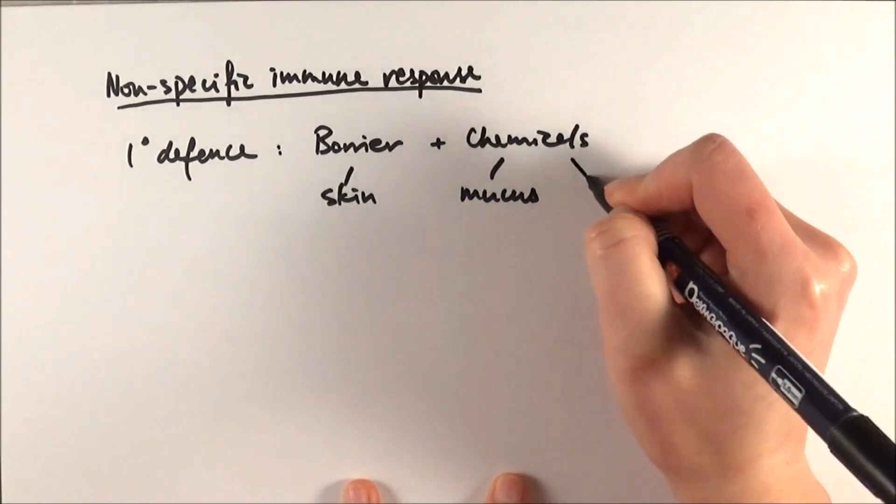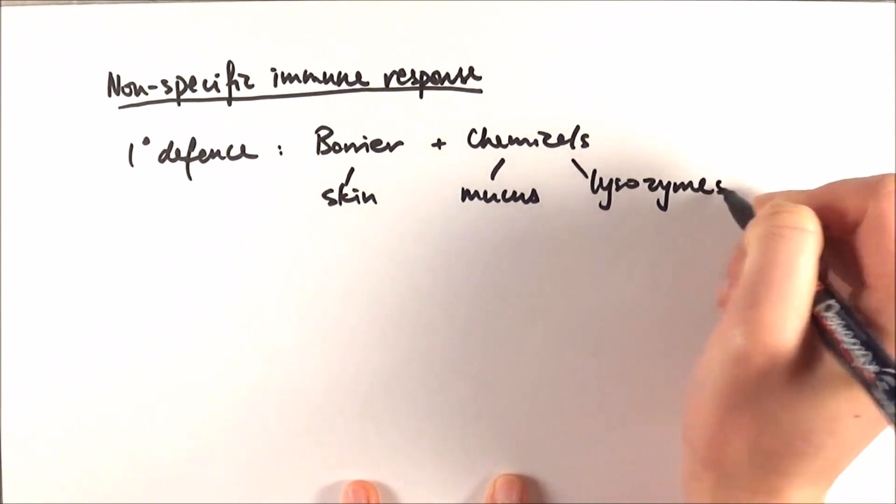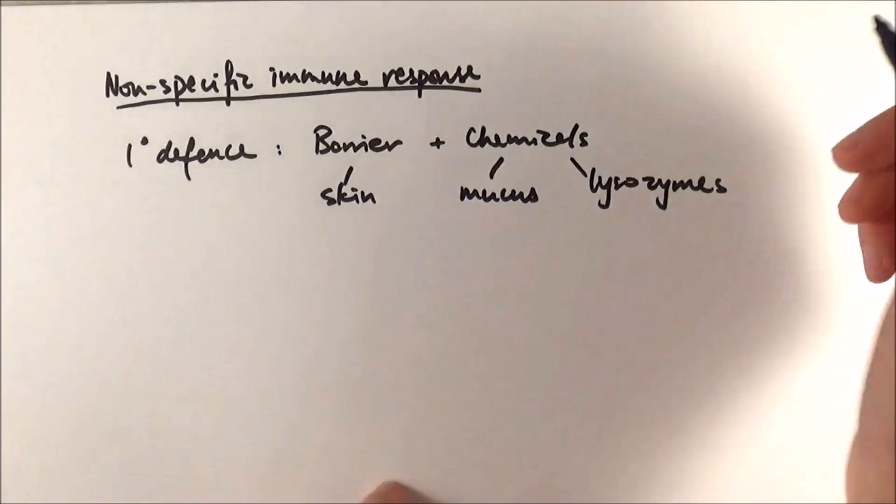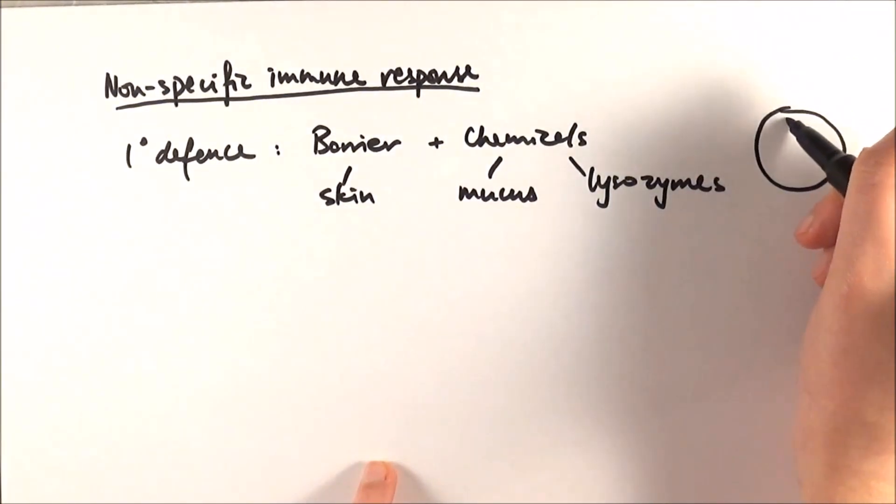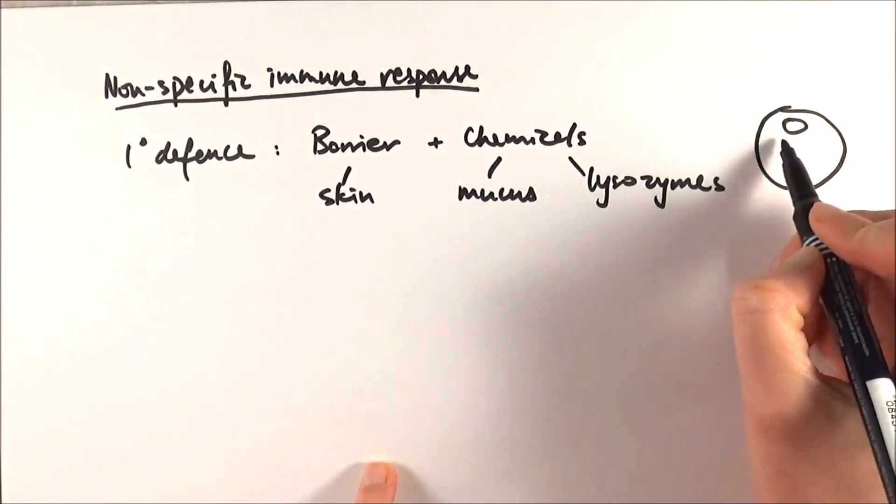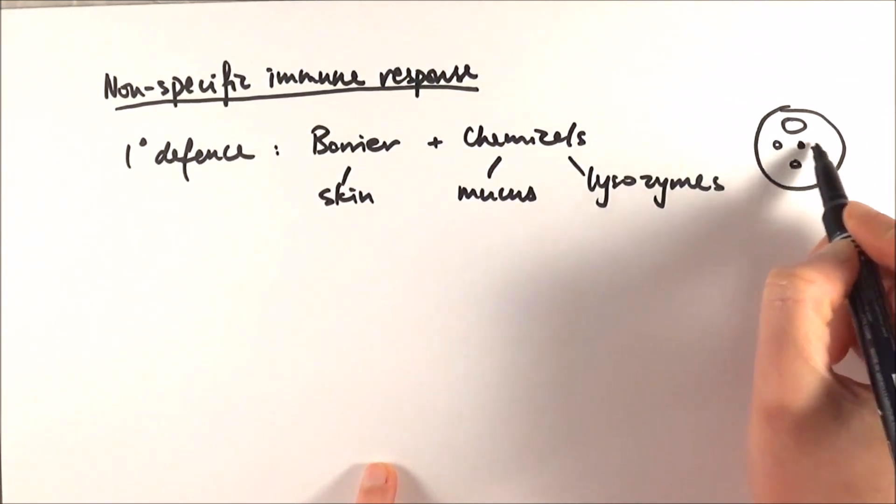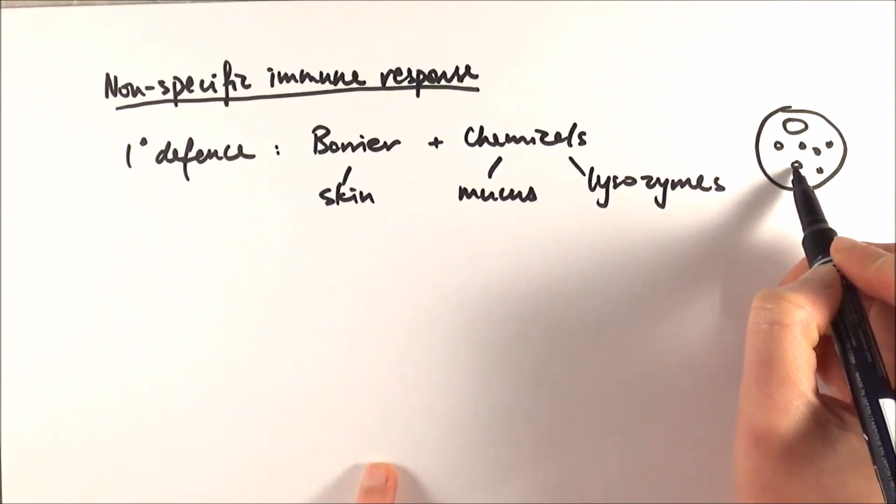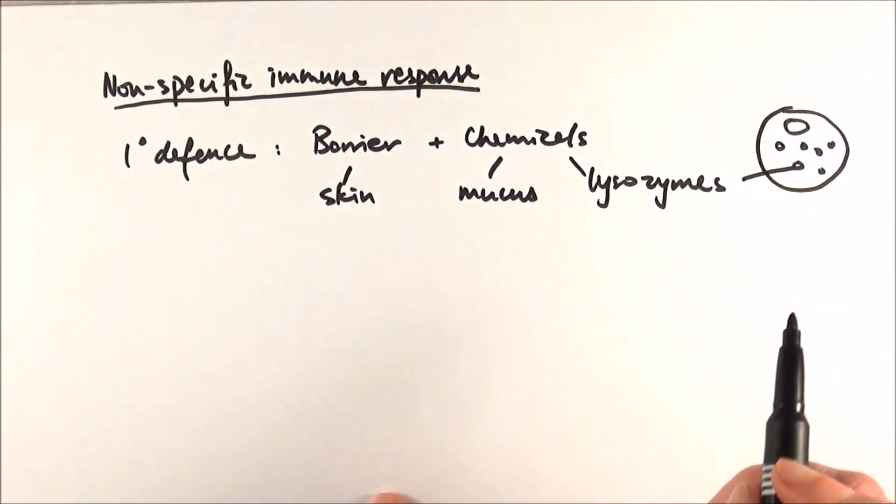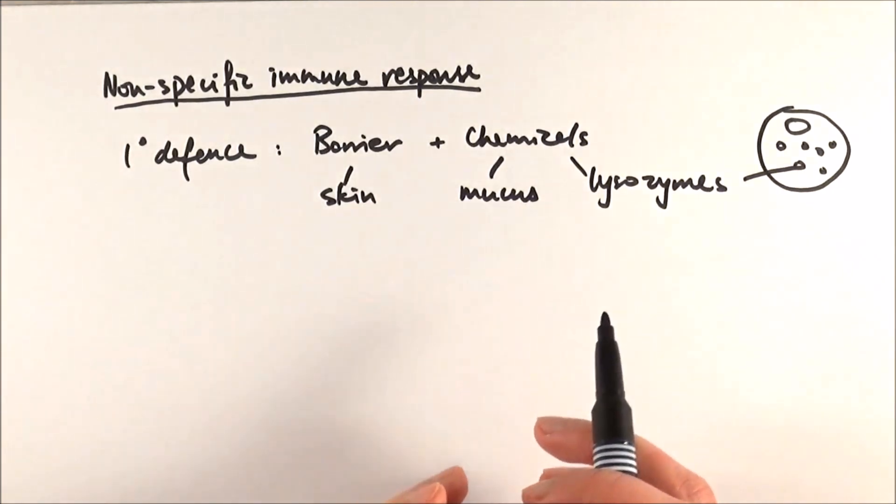We also have lysosomes. This is further into the system where inside the cell you have your nucleus and different lysosomes. Inside each of them are lysosomes, which are basically a bunch of enzymes that can digest pathogens when they get engulfed inside the cell.